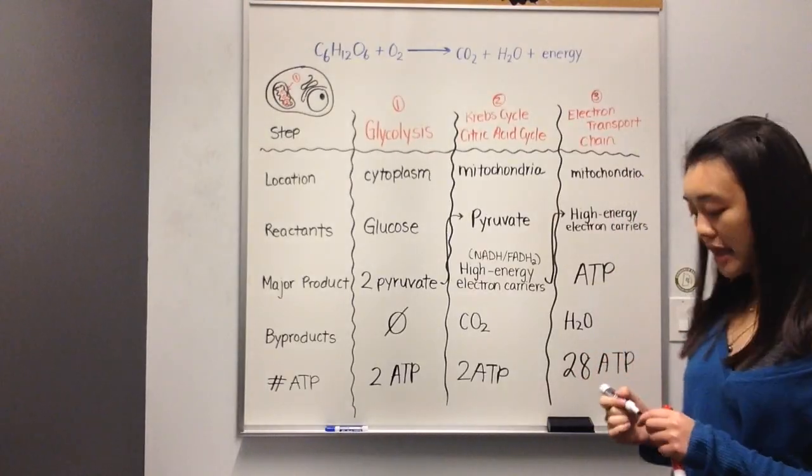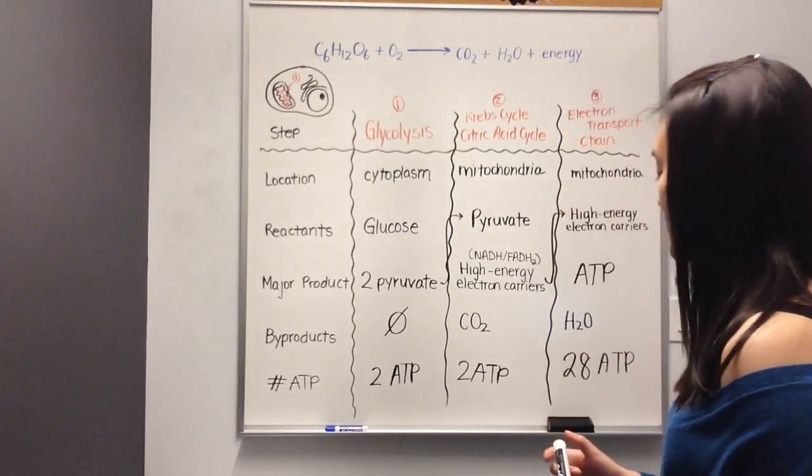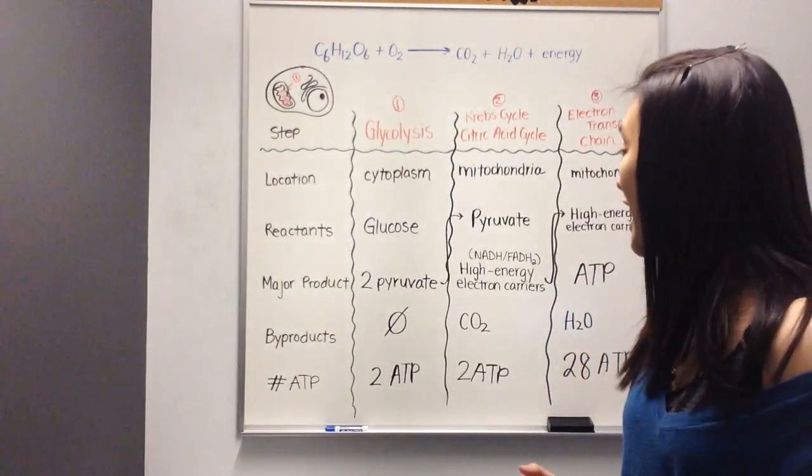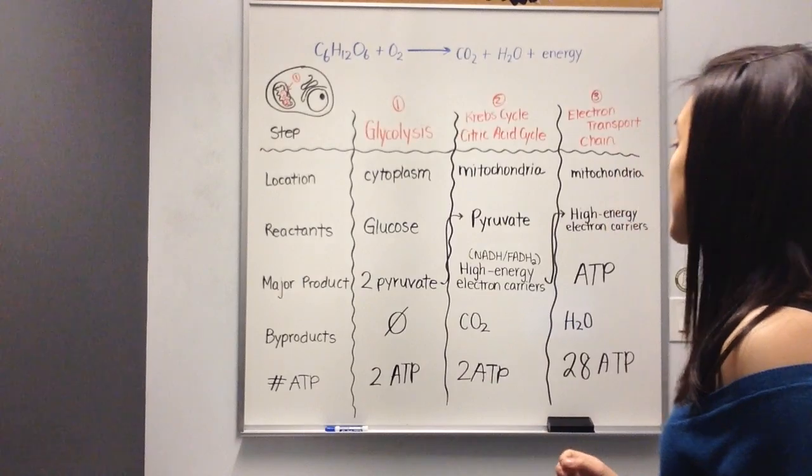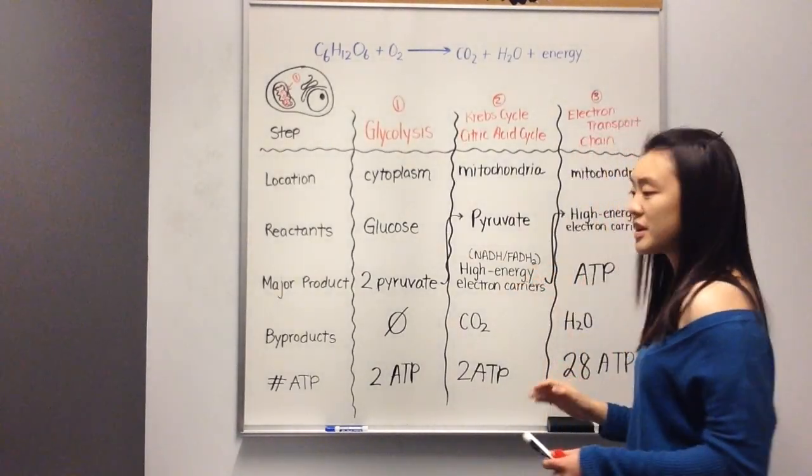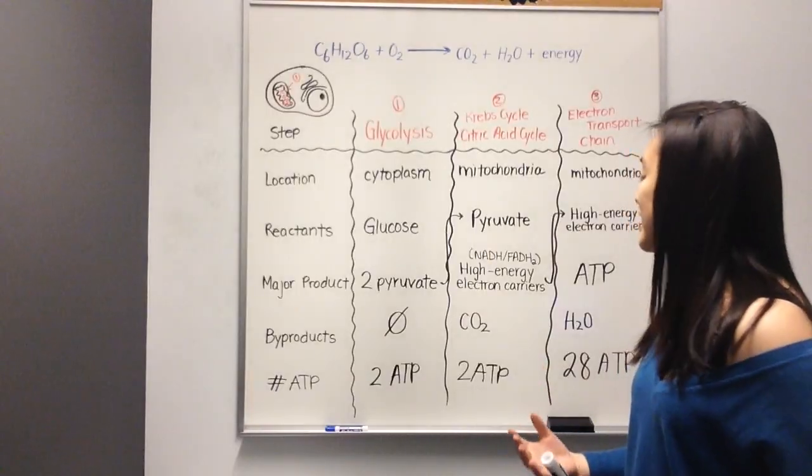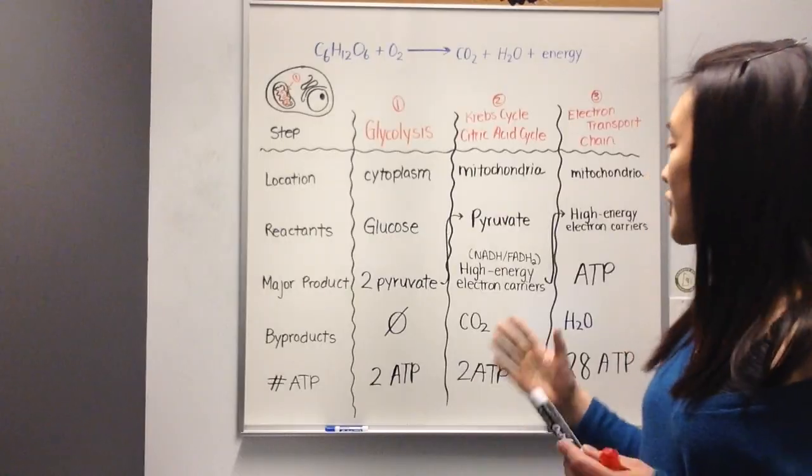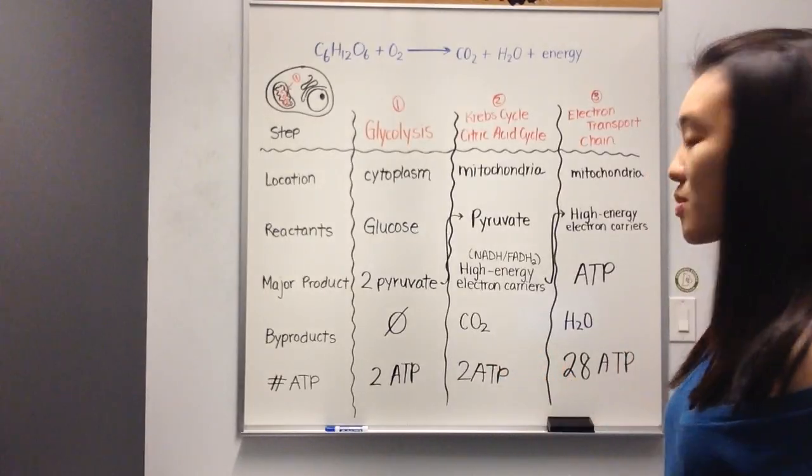Some sources that you see may say that you are producing 30 or 32 ATP molecules, and the answer is it really does depend. It depends on whether you are using NADH or FADH2. It depends on the high-energy electron carriers that are involved in the reaction. For the most part, however, you will see 28 ATP.